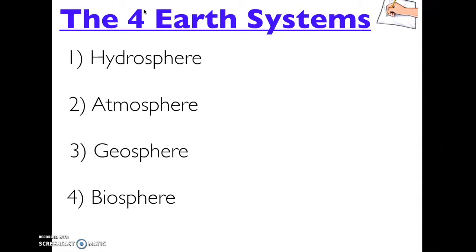If you notice, all of the Earth's systems end with the word sphere, so they are often also called the four Earth spheres. Let's talk about each one in more detail.